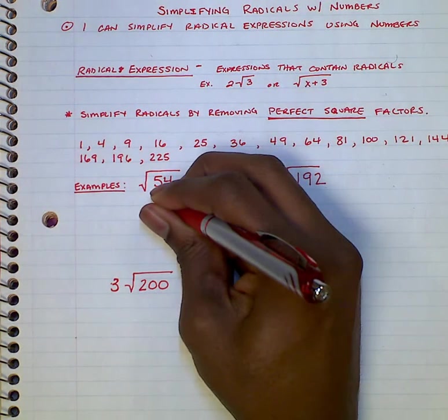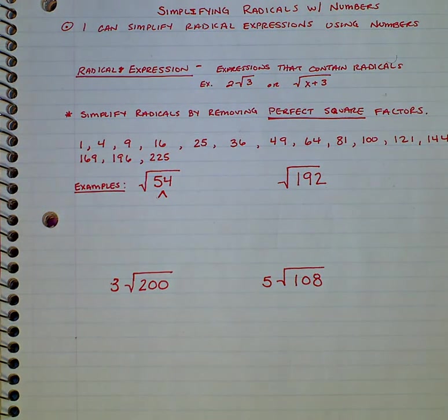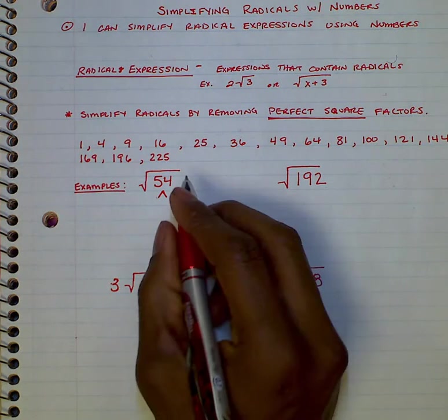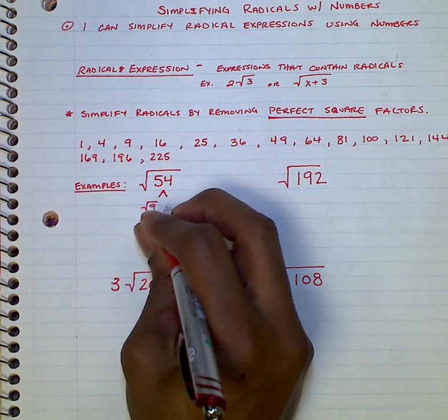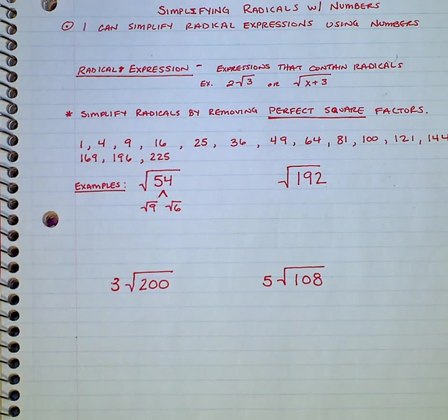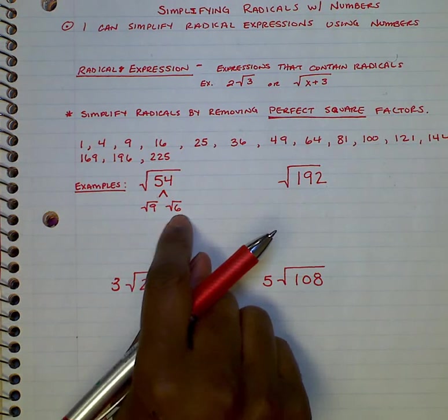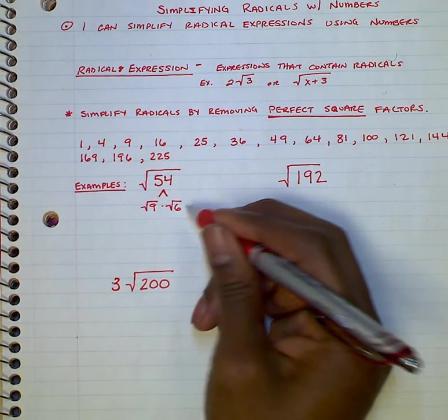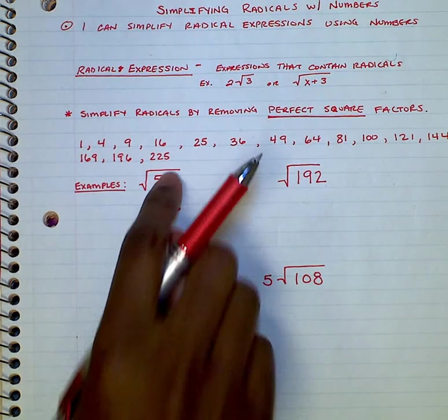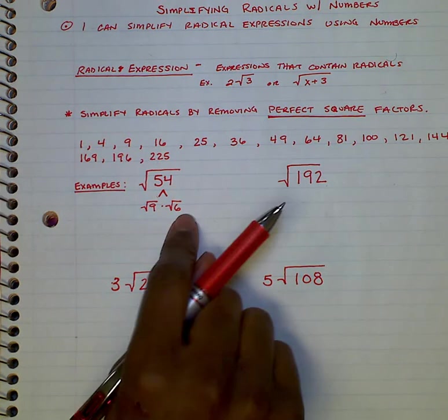Radical 54, I can write this a different way using multiplication. I can rewrite radical 54 as 9 times 6. Because both of these numbers are inside the radical, I can multiply them together, and 9 times 6 is 54. But radical 9 times radical 6 is radical 54. So I'm not changing the number, I'm just separating it to help me write it in simplest radical form. Simplest radical form says I shouldn't have any perfect square factors underneath my radical.